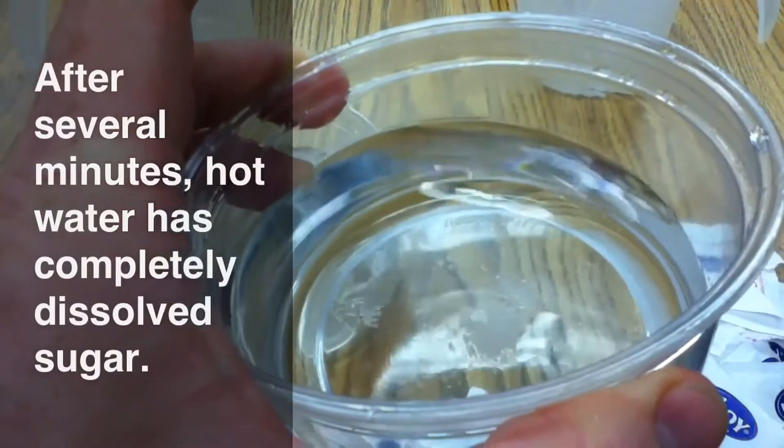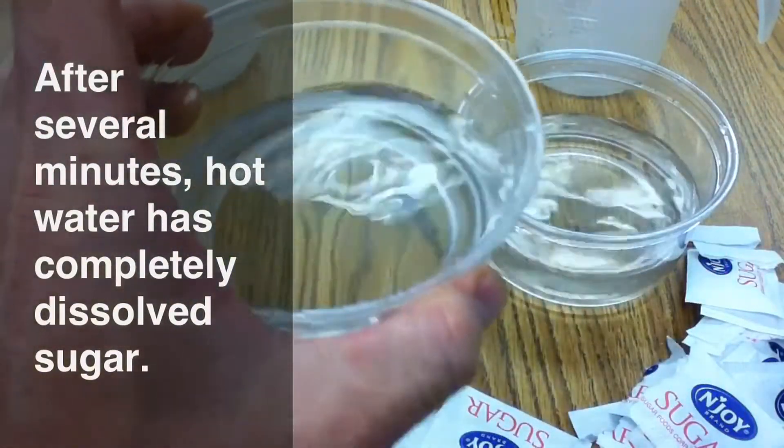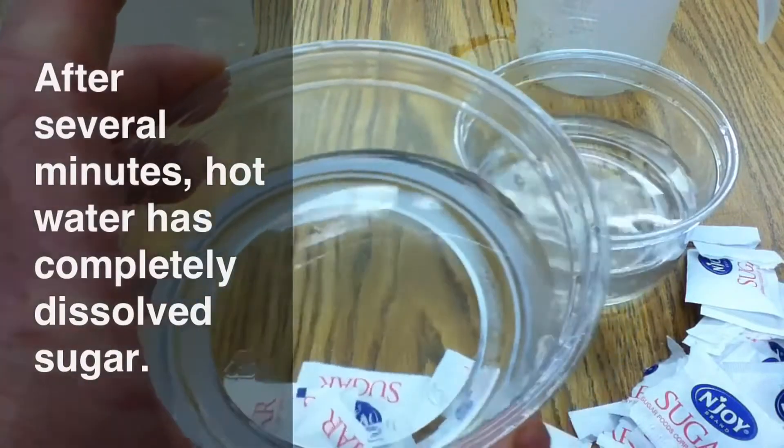Thus, almost all the sugar has dissolved in the cup with hot water. But in the cup with cool water, there's still a lot of sugar left down at the bottom.